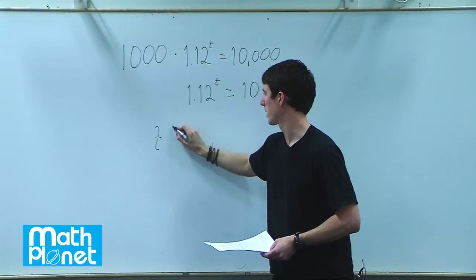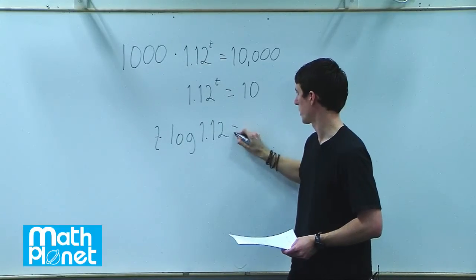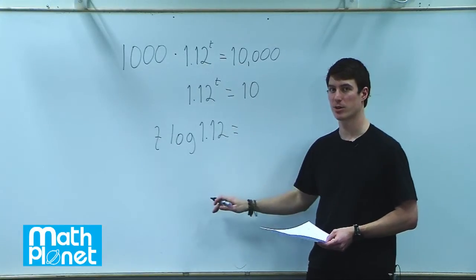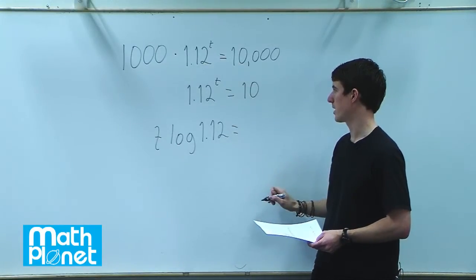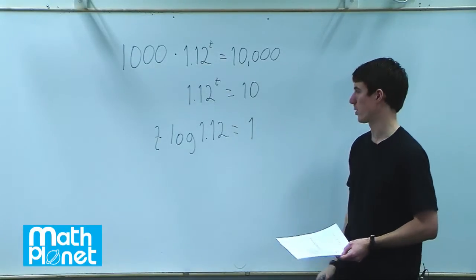t times the logarithm of 1.12 equals the logarithm of 10. So I'm using base 10 logarithms. Logarithm of base 10 is just 1. So this is the logarithm of both sides. Logarithm of 10 is 1.